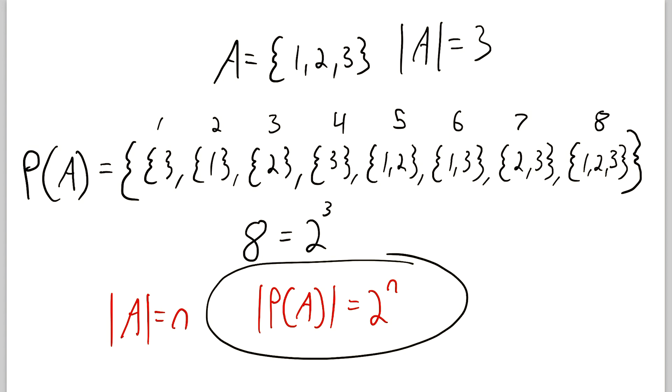But why is this true? Well, that's the interesting question that we're going to get into today. So why does this formula work? Let's go over it. So let's say we have a set S, and the cardinality of S is equal to n. There are n elements in the set S.